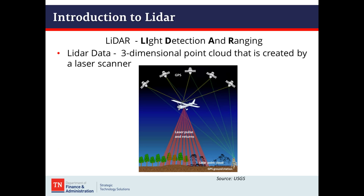So what is LiDAR? LiDAR is light detection and ranging. A three-dimensional point cloud is created by a laser scanner. In the case of the 3DEP data, the laser scanner is mounted on the bottom of an aircraft. That scanner emits laser pulses, those pulses come in contact with objects and are reflected back to the sensor. Since we know the XYZ location of the sensor using GPS technology, we're able to figure out the X, Y, and Z of the objects those pulses came in contact with.